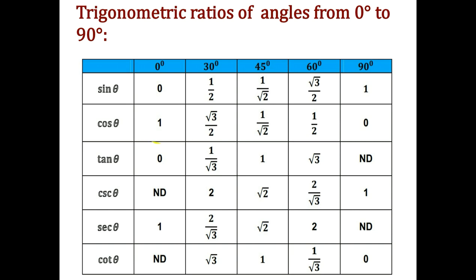The values of cos theta, which decrease from 0° to 90°, are: cos 0° = 1, cos 30° = √3/2, cos 45° = 1/√2, cos 60° = 1/2, and cos 90° = 0. The reciprocal of cos theta is secant theta, so: secant 0° = 1, secant 30° = 2/√3, secant 45° = √2, secant 60° = 2, and secant 90° is not defined.